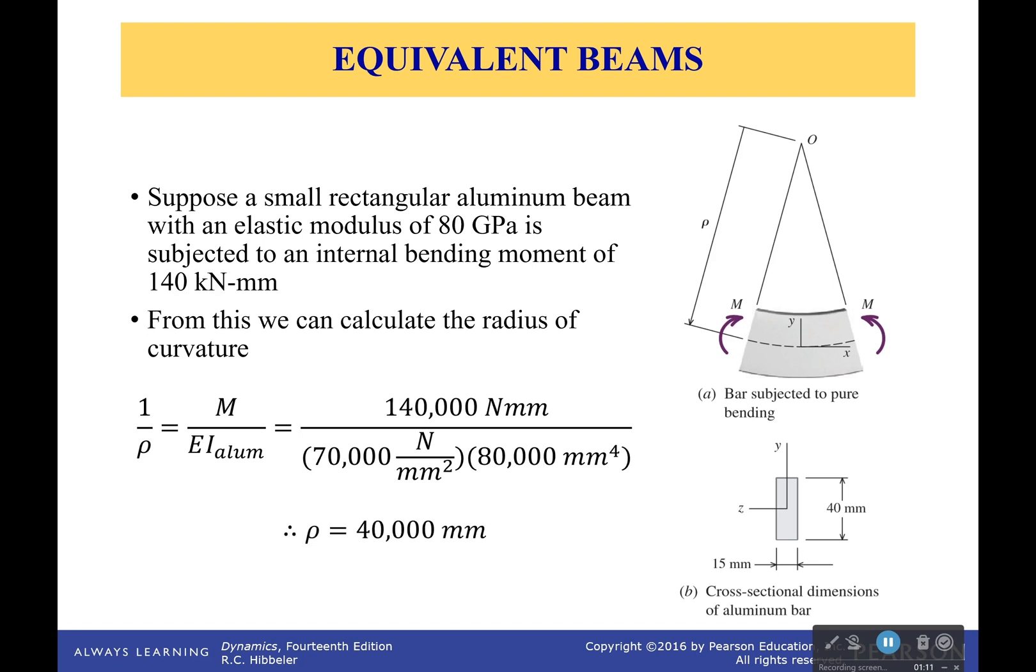So we plug all this in and we'll get the radius of curvature that is 40,000 millimeters. So you can see that even when we're saying it's bending, it's not much. That's really, really small.